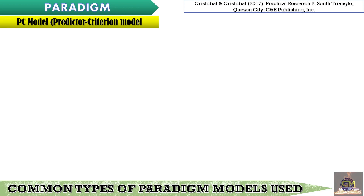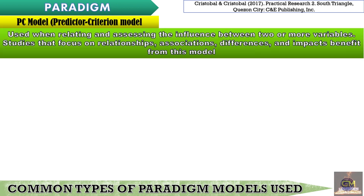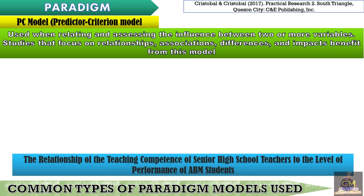The next model is the PC model, also known as the predictor-criterion model. The PC model is used when relating and assessing the influence between two or more variables. Studies that focus on relationships, associations, differences, and impacts benefit from this model. It is also worth noting that the PC model is used for non-experimental research studies. In non-experimental research designs, we have the predictor and criterion variables in lieu of the independent and dependent variables.